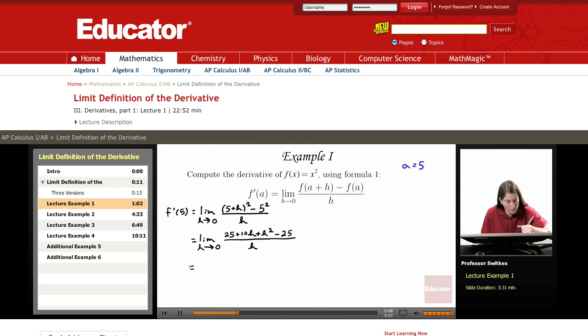And so our numerator now will look like 10 times h plus h squared all over h. And again the 25 minus 25 dropped out and I'll go ahead and just show those dropping out.